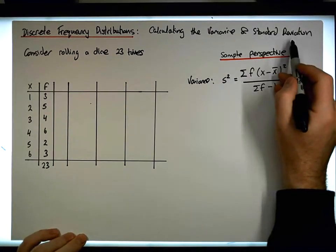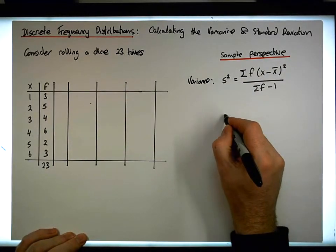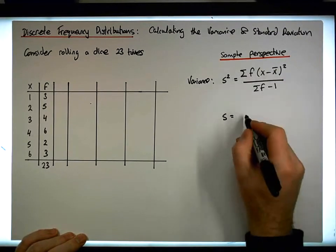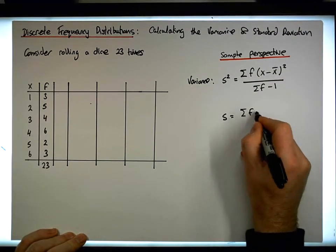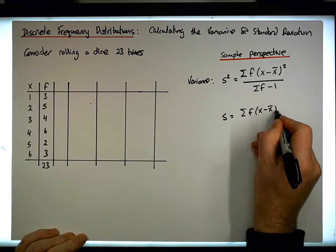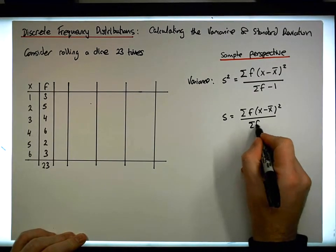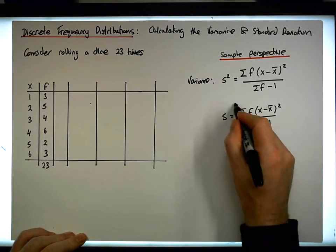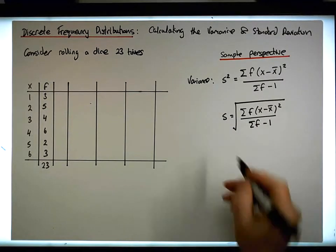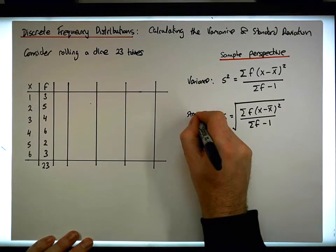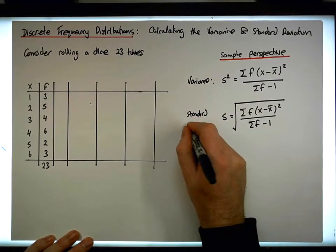And the standard deviation, by definition, is just the square root of the variance. So S is simply equal to the square root of this. So it's the sum of the frequencies times the X's minus the X-bar squared divided by the sum of the frequencies minus one, and it's the square root of that particular value. And this is the standard deviation.